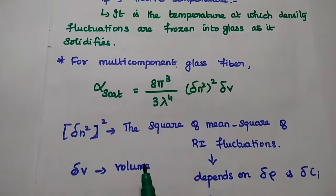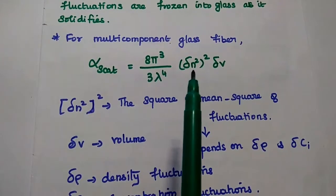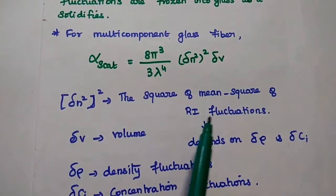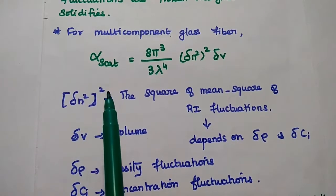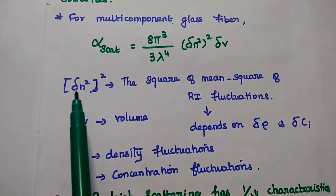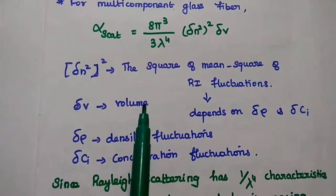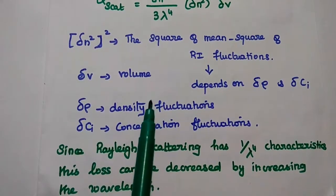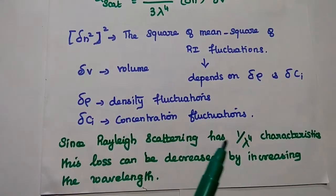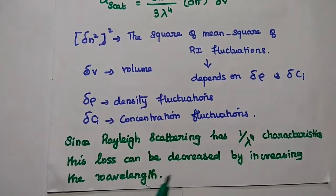For multi-component glass fiber, the scattering loss is given as: (8π³ / 3λ⁴) × (Δn²)² × ΔV, where Δn² is the mean square of refractive index fluctuations, and (Δn²)² is the square of that mean square. This value depends on density fluctuations and concentration fluctuations, and ΔV is the volume. From these two expressions, we can identify that Rayleigh scattering depends on 1/λ⁴, so this loss can be decreased by increasing the wavelength.